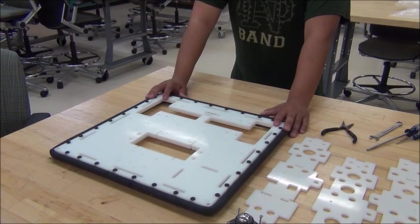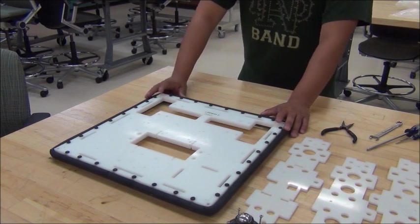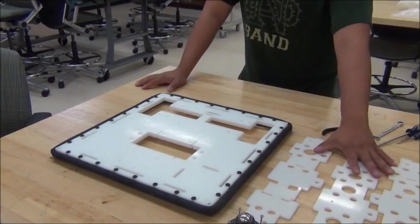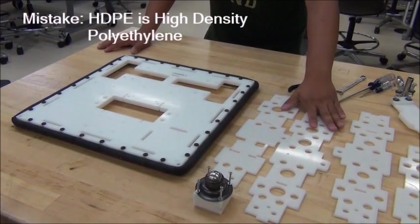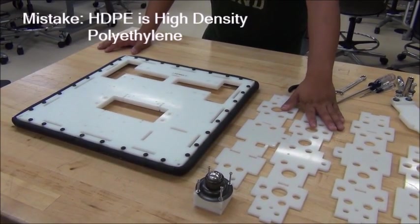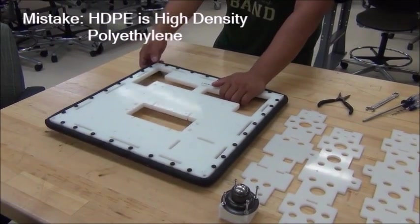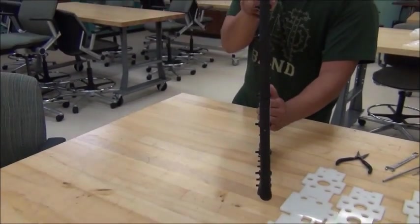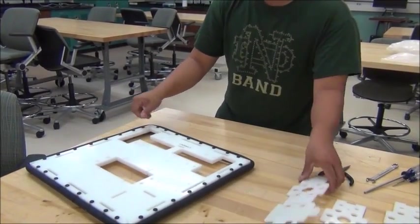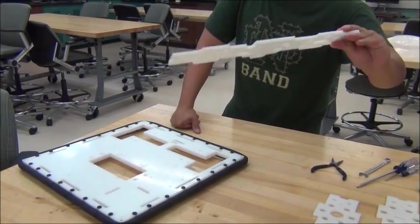Quick thing to note before we get started is that all of our material, all of our plastic components are made out of high-density polyurethane or HDPE and the base plate uses a half inch thick HDPE while all of these sidewalls and small components use quarter inch.